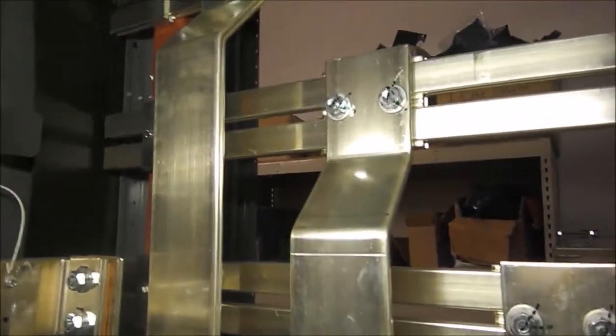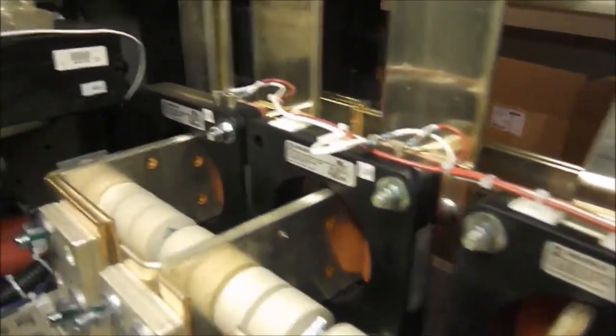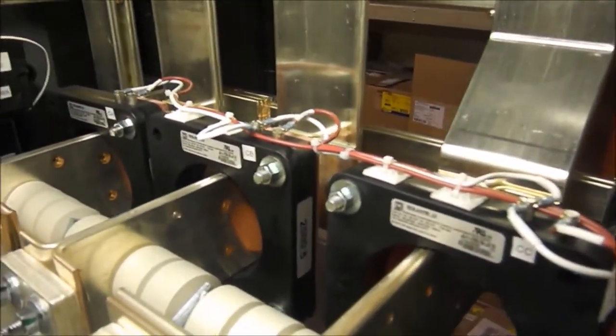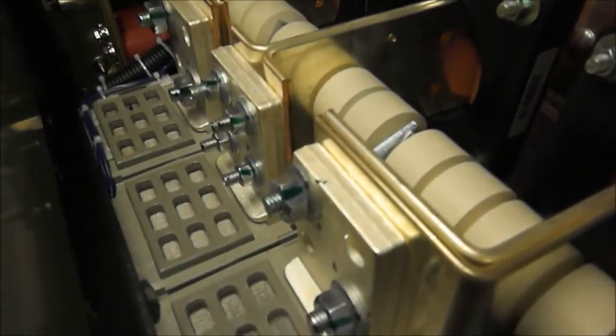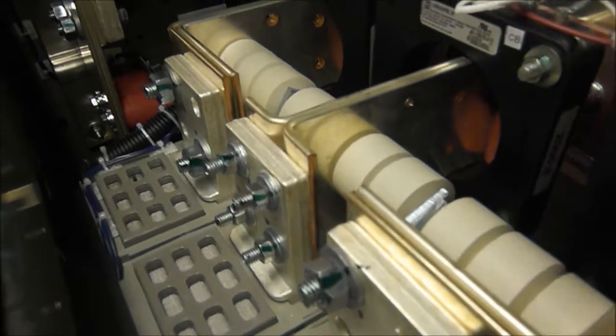When we look inside the switchboard we see three-phase power comes in over three main buses, travels down through three CTs or current transformers to measure the power and then continues on through three buses into the top lugs of the circuit breaker.